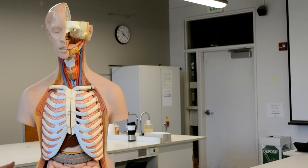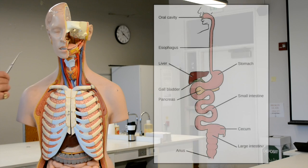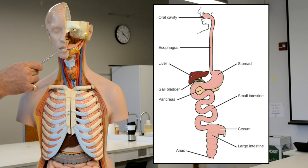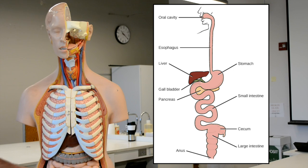This series of videos is about the digestive system. In its simplest form, the digestive system is a tube that starts at the mouth and ends at the anus with various accessory organs.